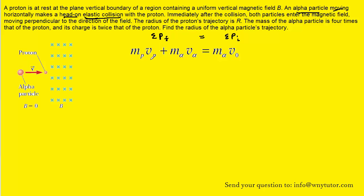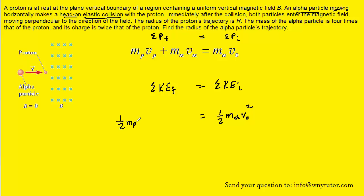On the final side we have the mass of the proton times the velocity of the proton, plus the mass of the alpha particle times the final velocity of the alpha particle. Because the collision was elastic, the total final kinetic energy equals the total initial kinetic energy. The initial side has one-half times the mass of the alpha particle times its initial velocity squared, and the final side has one-half times the mass of the proton times the velocity of the proton squared, plus one-half times the mass of the alpha particle times the final velocity of the alpha particle squared.